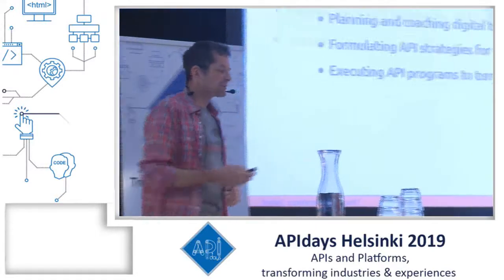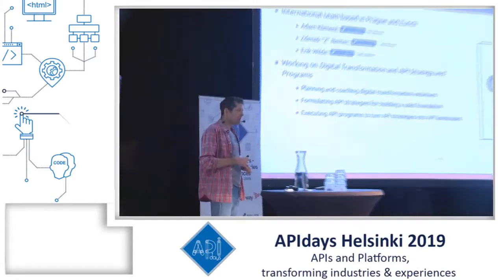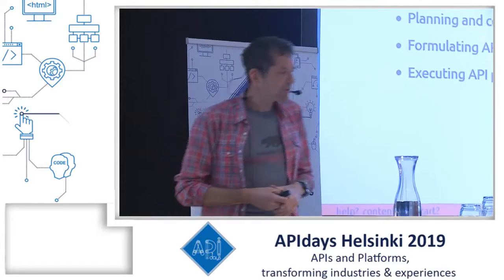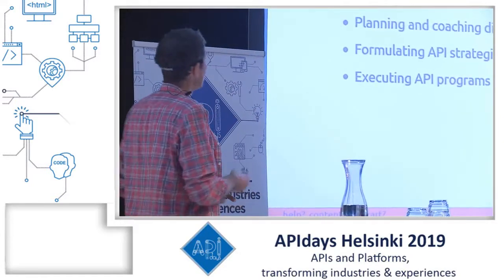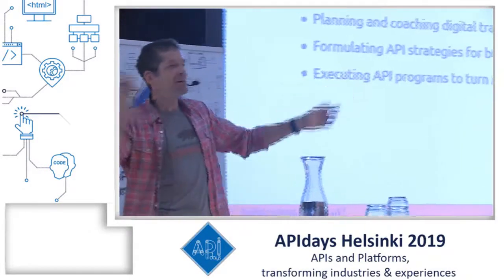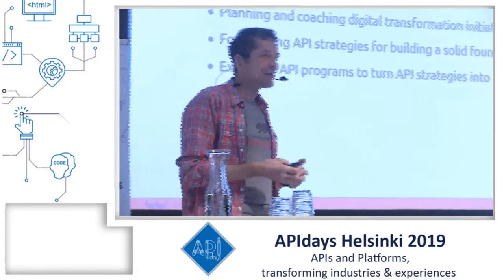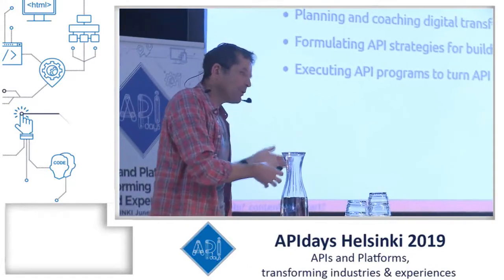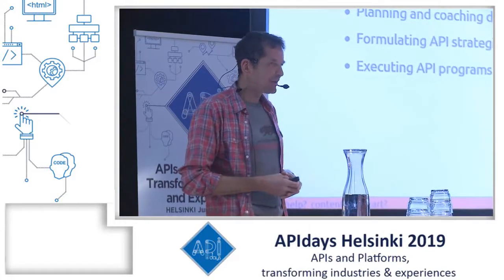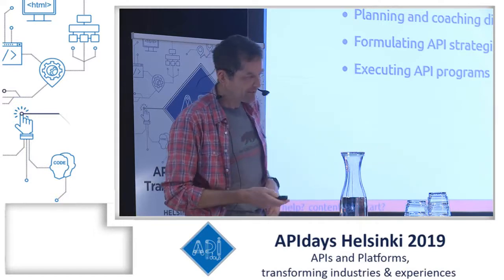I've been doing these kinds of things for a while. I worked at CA's API Academy, and then starting this year I have a very small team — two partners, Adam and Zee, and myself. We call ourselves Good API. Our goal really is to help companies better understand what APIs do, what is important when you want an API strategy, how you create one, and how you run a program so that in the end you have good APIs.